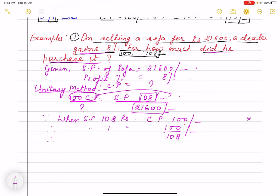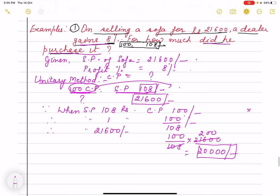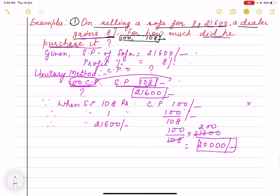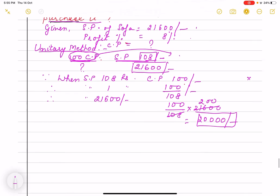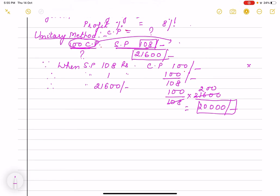Jab ek ka nikalte hain toh hum divide karte hain, aur jab hum jyada ka nikalte hain so we multiply. So what is SP now in our case? For sofa it is 21,600. So now it is more so we multiply. So it is 200, four zeros are there, minus. My cost price is 20,000 rupees. And I sold it for 21,600 then I have a profit of 8 percent. So you can go for unitary method also.